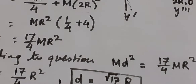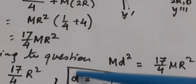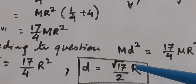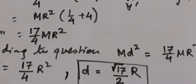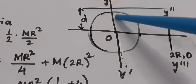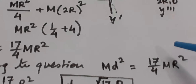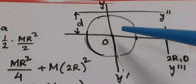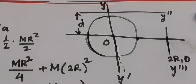Using the radius of gyration concept, mass times distance squared gives the moment of inertia. After simplification, d = √(17/2) · R. This gives the equal moment of inertia when rotating with respect to that axis.